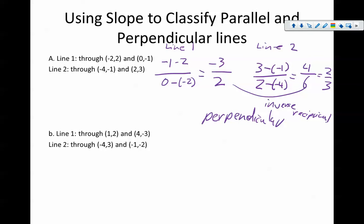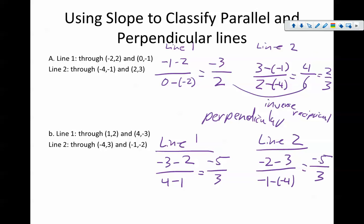Let's do our second example. Line one goes through one comma two and four comma negative three. So that's negative three minus two and four minus one, so negative five over three, negative five thirds. Line two goes through negative four comma three and negative one comma negative two. So that's negative two minus three over negative one minus negative four. This is negative five over positive three. Parallel, perpendicular, or neither? These two slopes are the same, which means they are parallel lines.